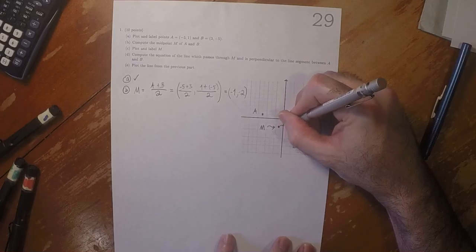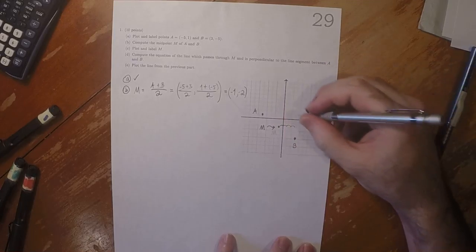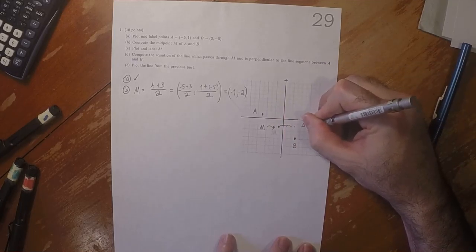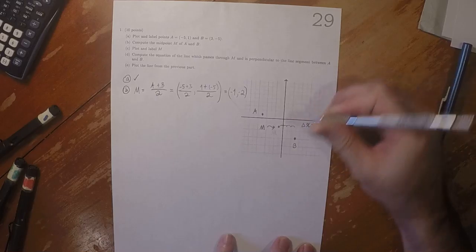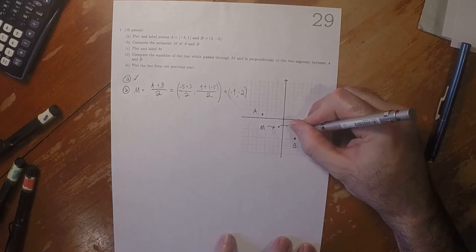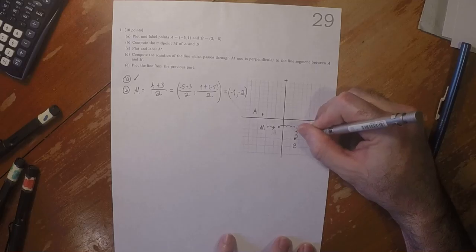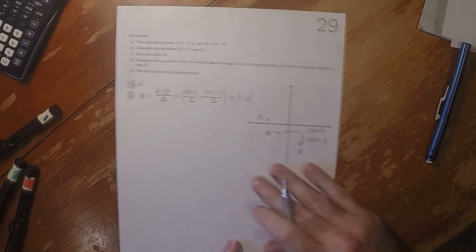That would be 1, 2, 3, 4. So the change in X is 4. And then 1, 2, 3. The change in Y is negative 3.